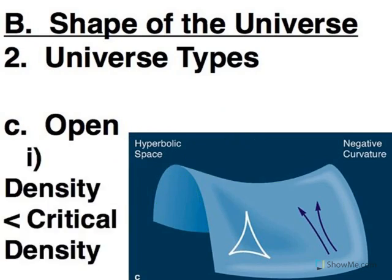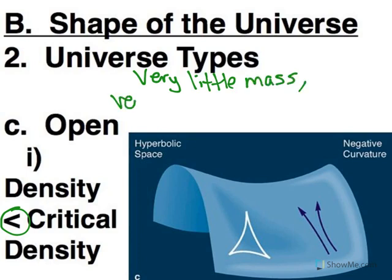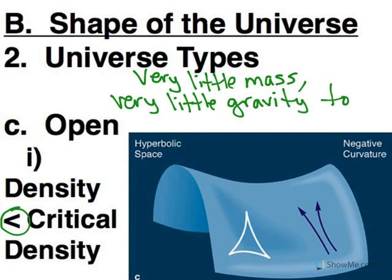Now we've got a universe where the density is less than critical density. So that means that there is very little mass, which means very little gravity to resist expansion. And very little mass to curve the space, which is why we get this hyperbolic curvature.